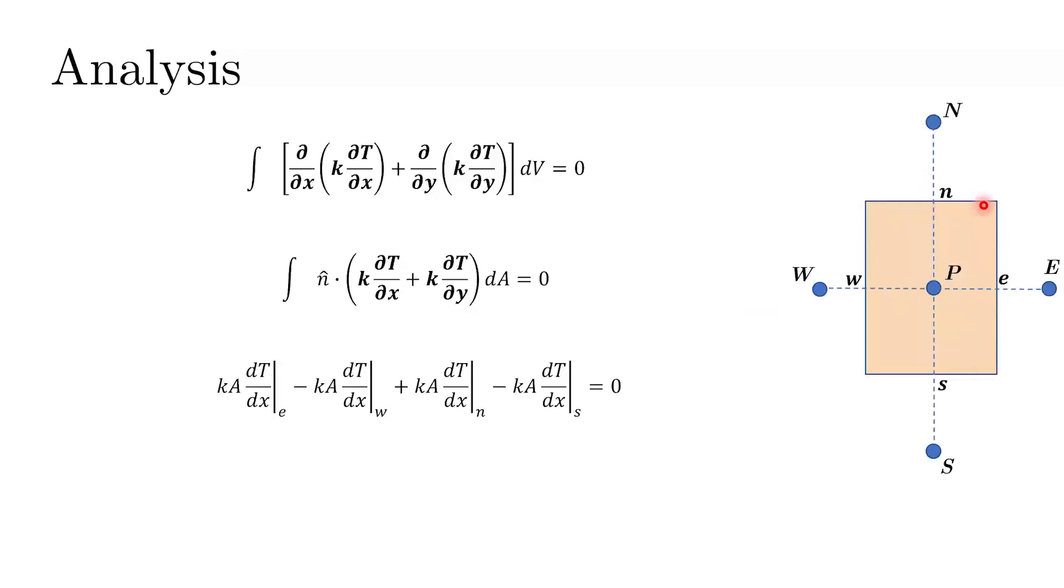And similarly, now if I look at the north face, I know that the unit normal is now pointing outwards in the positive y direction. And therefore, we have Ka dt over dy at the north face, minus Ka dt over dy at the south face, because this vector would be pointing downwards, which is the negative y direction. So, both of these things are dt over dy, I am really sorry for this mistake.